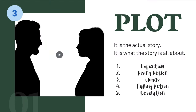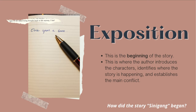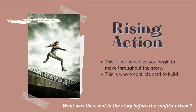The third element of a short story is the plot. It is the actual story — what the story is all about. It is also the series of events and characters' actions that lead to the highest point of interest in a short story. The following are the different parts of a story's structure: Exposition, Rising Action, Climax, Falling Action, and Resolution. First, Exposition — this is the beginning of the story. This is where the author introduces the characters, identifies where the story is happening, and establishes the main conflict. How did the story Sinigang begin? That is the exposition of its story. Next, we have Rising Action. This event occurs as you begin to move throughout the story. This is where the conflicts start to build. What was the event in the story before the conflict arose? That is the rising action of the story you have read or watched earlier.